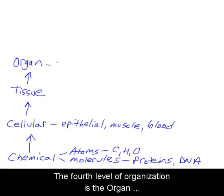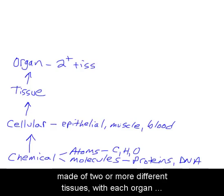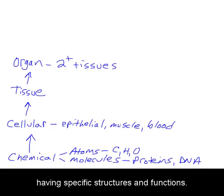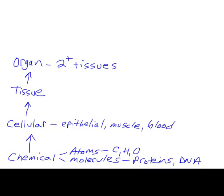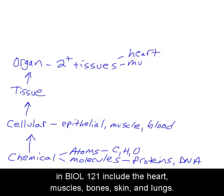The fourth level of organization is the organ level. Organs are larger structures made of two or more different tissues, with each organ having specific structures and functions. Examples of organs that we will be studying in Biology 121 include the heart, muscles, bones, skin, and lungs.